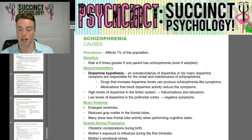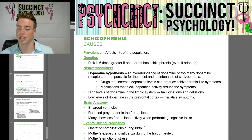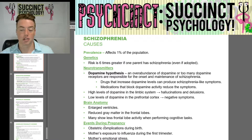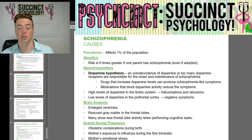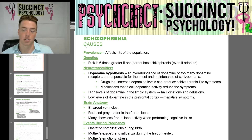Brain anatomy factors include enlarged ventricles, reduced gray matter in the frontal lobes, and many individuals show less frontal lobe activity when performing cognitive tasks. Events during pregnancy that may contribute include obstetric complications during birth, the mother's exposure to influenza during the first trimester, or the mother's emotional stress.